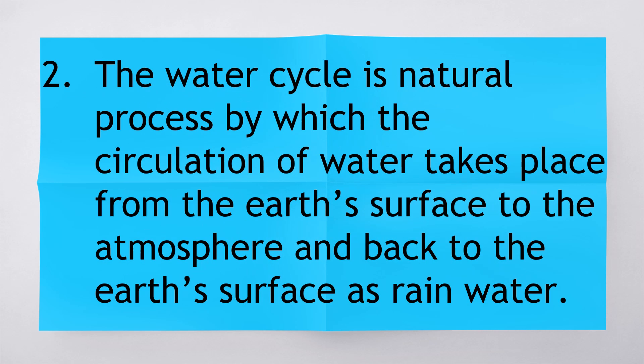The water cycle is a natural process by which the circulation of water takes place from the earth's surface to the atmosphere and back to the earth's surface as rainwater.